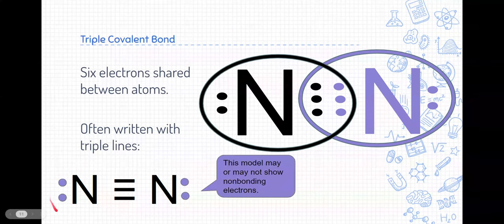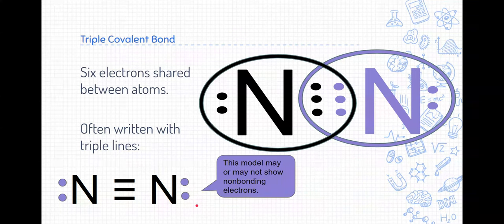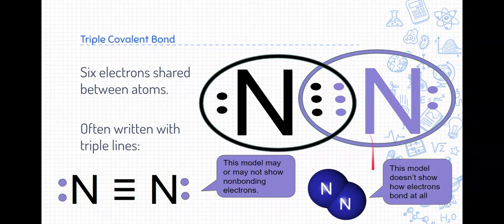Sometimes with these forms, by the way, it's convenient and nice to add non-bonding electrons just to show where those other electrons are. This model also is a way to show this, but this one doesn't show any of the electrons or the bonding at all. There's a lot of different ways to show the same thing.